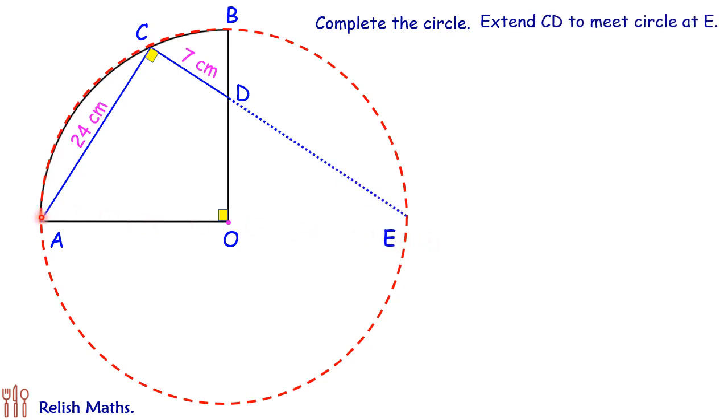Now, if we look at angle ACE, this angle is 90 degrees. We know that in a circle, if a chord subtends an angle of 90 degrees, then that chord has to be the diameter of the circle. Thus, AE is the diameter of the circle.